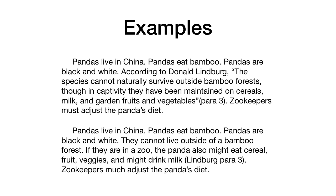Paragraph 3: zookeepers must adjust the panda's diet. Common knowledge does not have to be cited — pandas live in China, pandas eat bamboo, pandas are black and white. But most people will not know that they cannot live naturally outside bamboo forests. I found an encyclopedia article written by Donald Lindbergh, so I wrote 'according to Donald Lindbergh,' gave his exact quote, and since there's no page number on that website, I noted it's found in the third paragraph. Then I returned to my own writing: zookeepers must adjust the panda's diet.